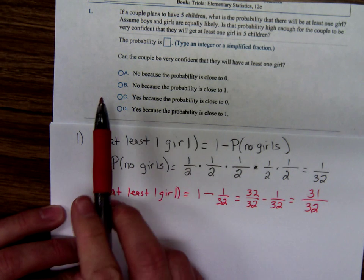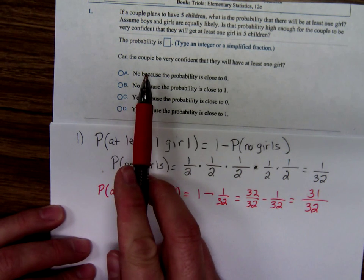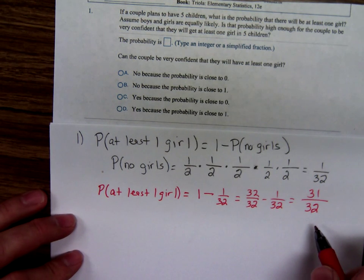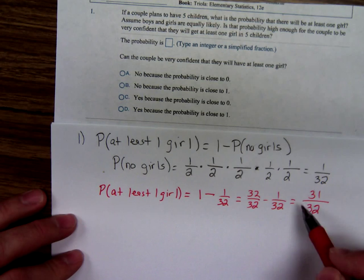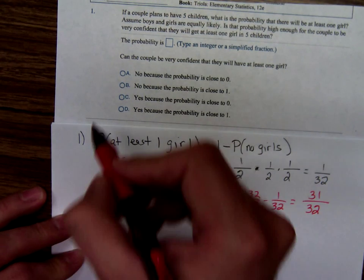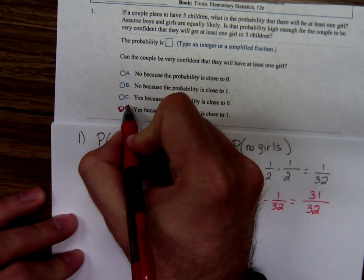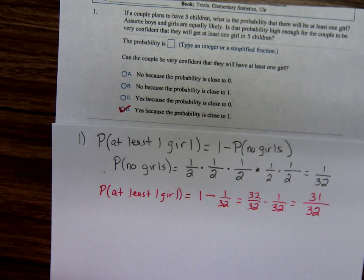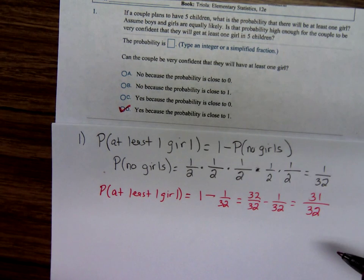Now, can the couple be very confident that they'll have at least one girl? Well, this is so close to one, we would have to say yes. This couple should be very confident that they're going to have at least one girl because the probability is so close to one.